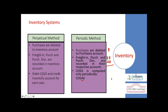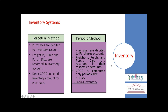Under the periodic inventory system, to find the cost of goods sold you must determine the closing inventory. You go and physically verify the inventory, record it, find the dollar amount, and deduct it from the total cost of goods available for sale to arrive at cost of goods sold. So under periodic inventory system, finding closing inventory is essential to know cost of goods sold, which is not considered best practice.